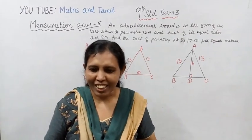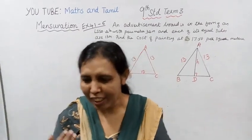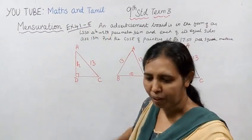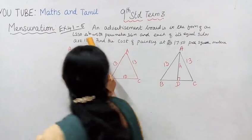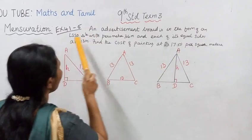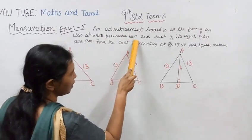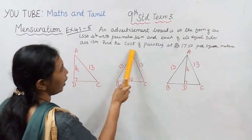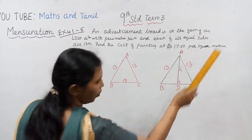Hello 9th standard students, welcome to Max and Tamil channel. Now I am going to look at mensuration — level 4.1, 5th sum. An advertisement board is in the form of an isosceles triangle with perimeter 36 meters and each of its equal sides are 13 meters. The cost of painting is Rs.17.50 per square meter.